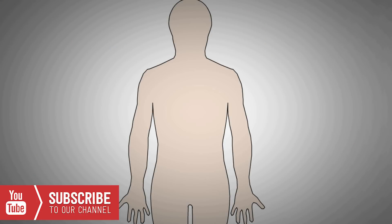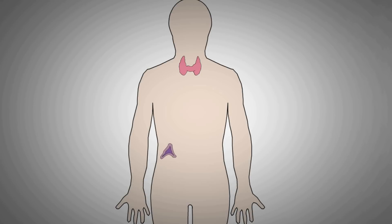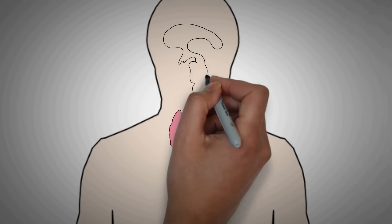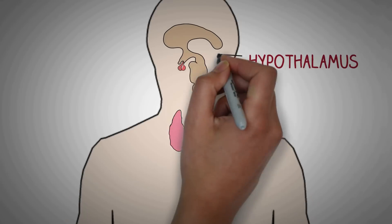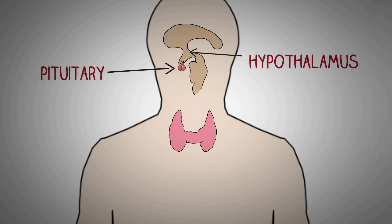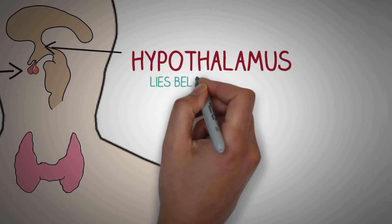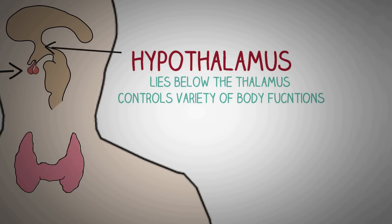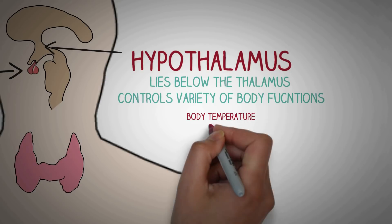All these endocrine glands all over the body require control, which is provided by two important endocrine glands located in the brain: the hypothalamus and the pituitary gland. The hypothalamus is a small, almond-sized part of the brain that lies below the thalamus and controls a wide variety of body functions to maintain a proper internal environment, including regulation of body temperature, hunger, sleep, thirst, and many other things.